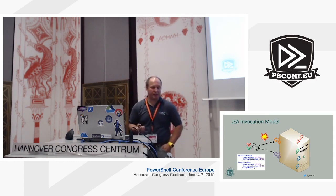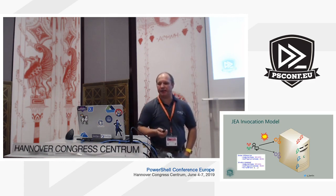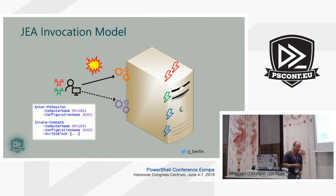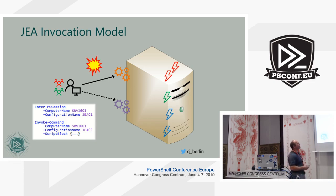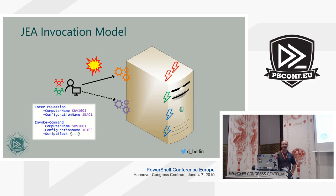Before we start into the JIA delivery modeling, let's look at how JIA invocation works under the hood. JIA utilizes the concept of endpoints, which are configurations. In the whole commandlets you will see this parameter 'configuration name.' I will use 'configuration' and 'endpoints' interchangeably for the sake of these talks. An invoker connects to a machine using a certain endpoint or configuration. If you don't specify anything, you're connecting to Microsoft.PowerShell — the default endpoint that exists on every Windows machine with PowerShell 2 or better installed.